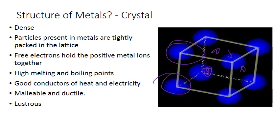How the atoms line up affects their mechanical properties. Metals are very tightly bound together because free electrons hold the positive metal ions together. Because of this tight bonding, it takes a lot of energy to melt them — they have high melting points, high boiling points, and are good conductors of heat and electricity. They are also malleable and ductile, meaning they can be worked into different shapes, and they are lustrous — they are shiny.